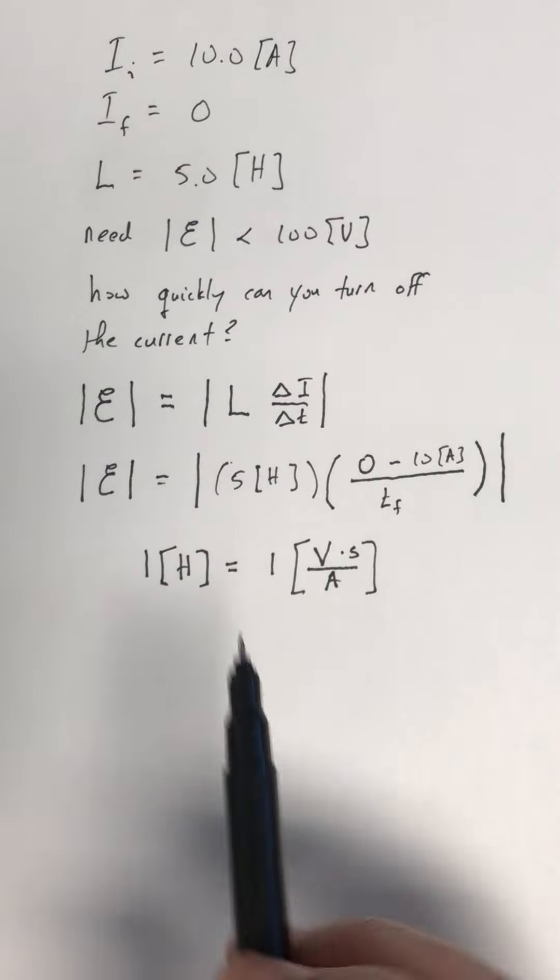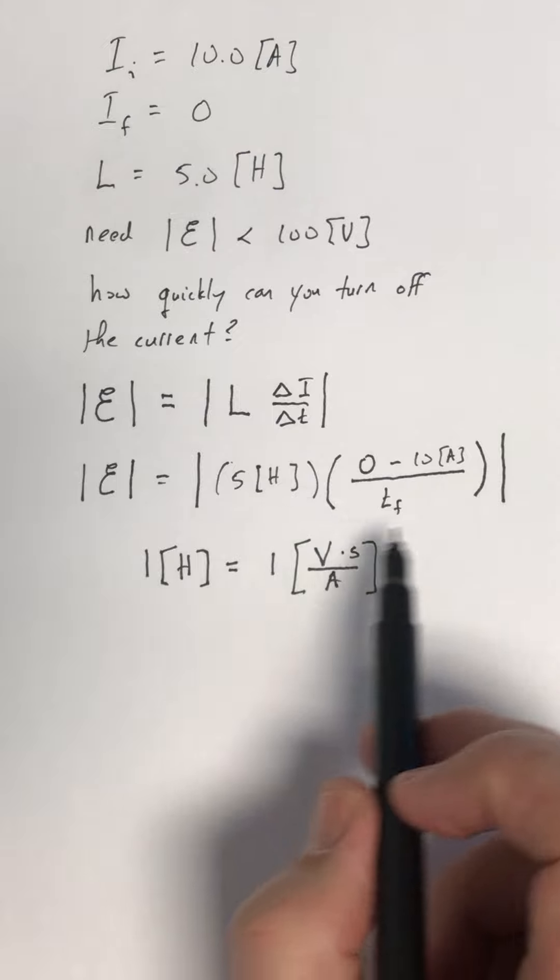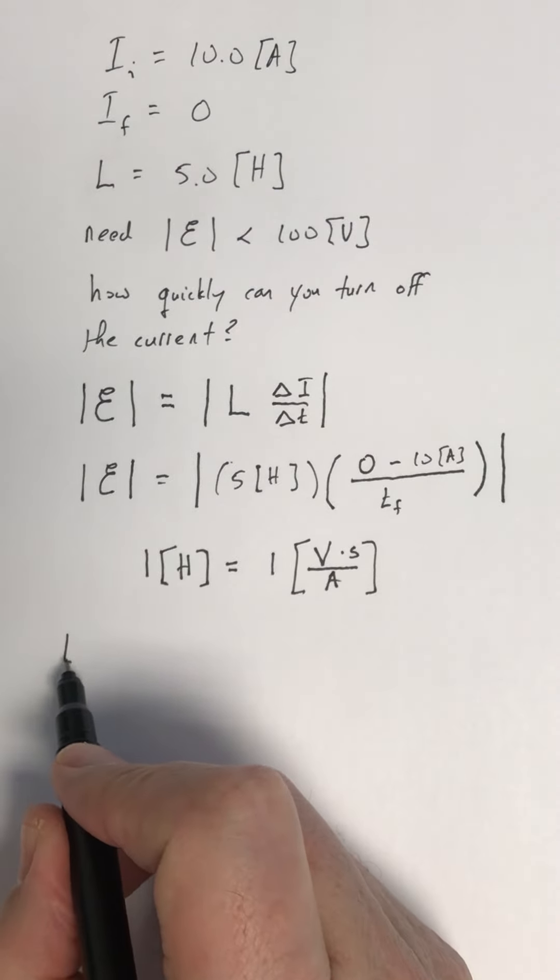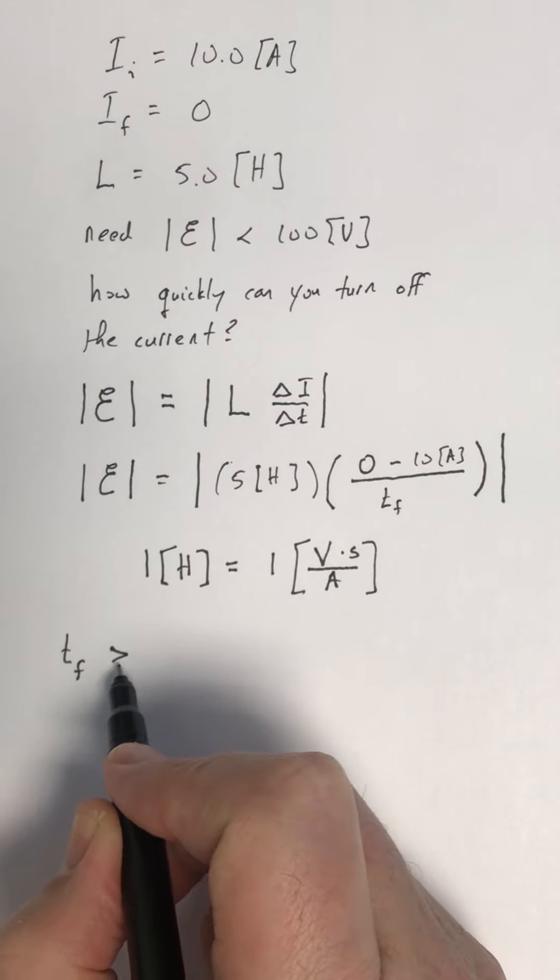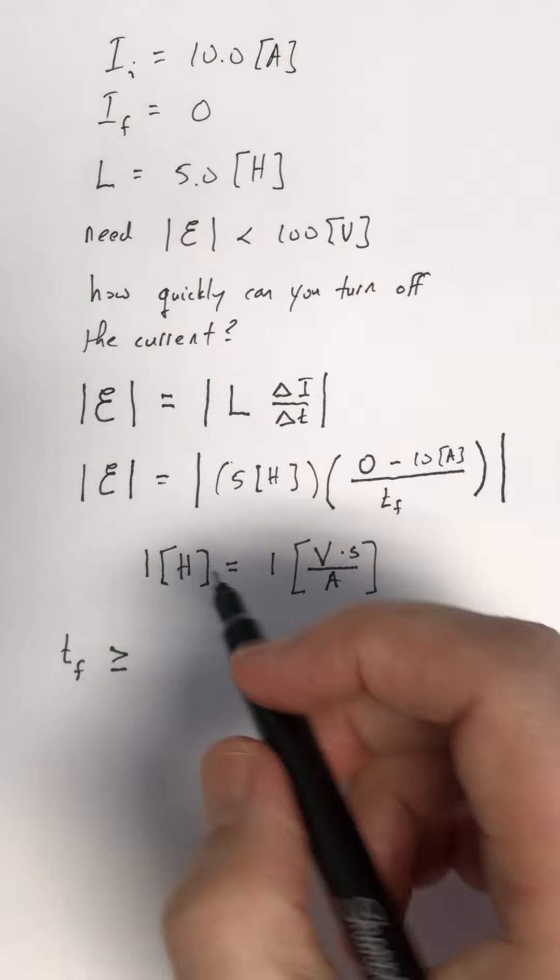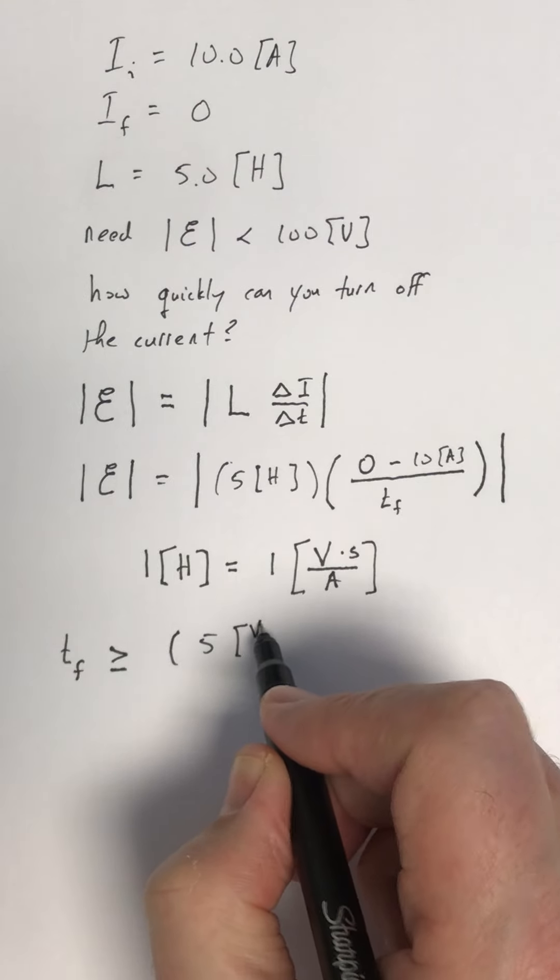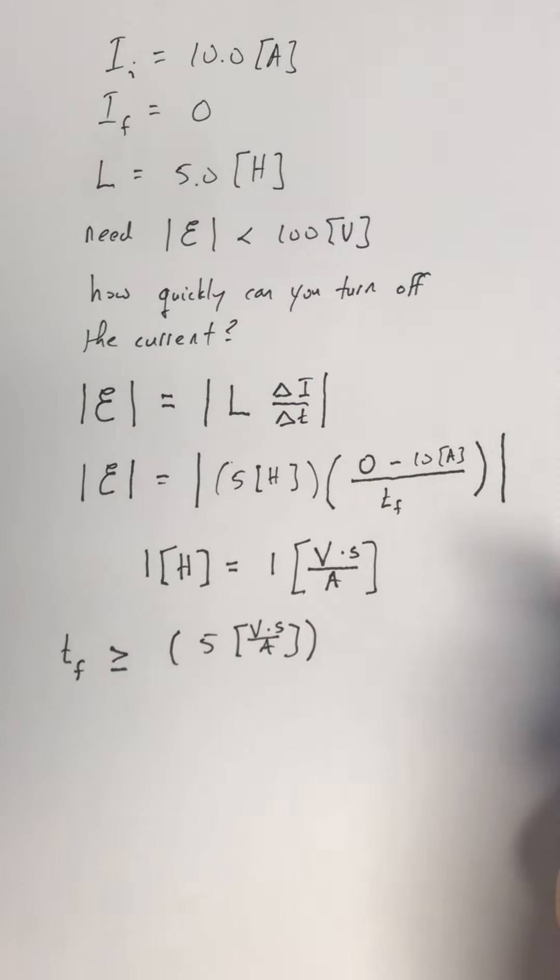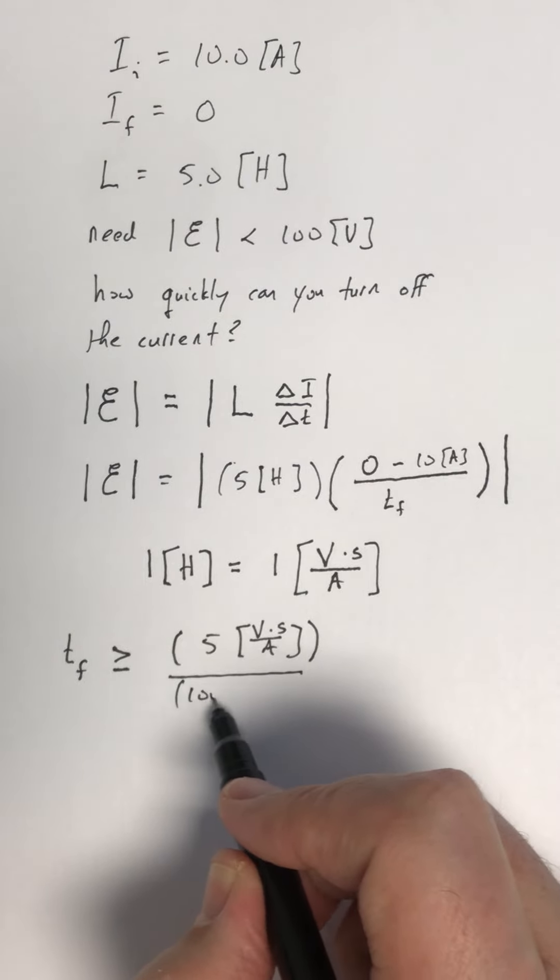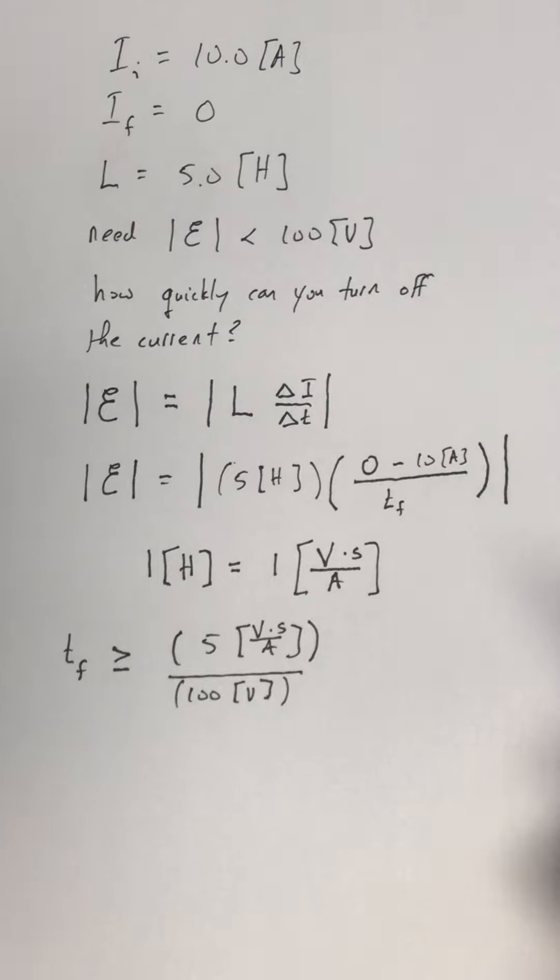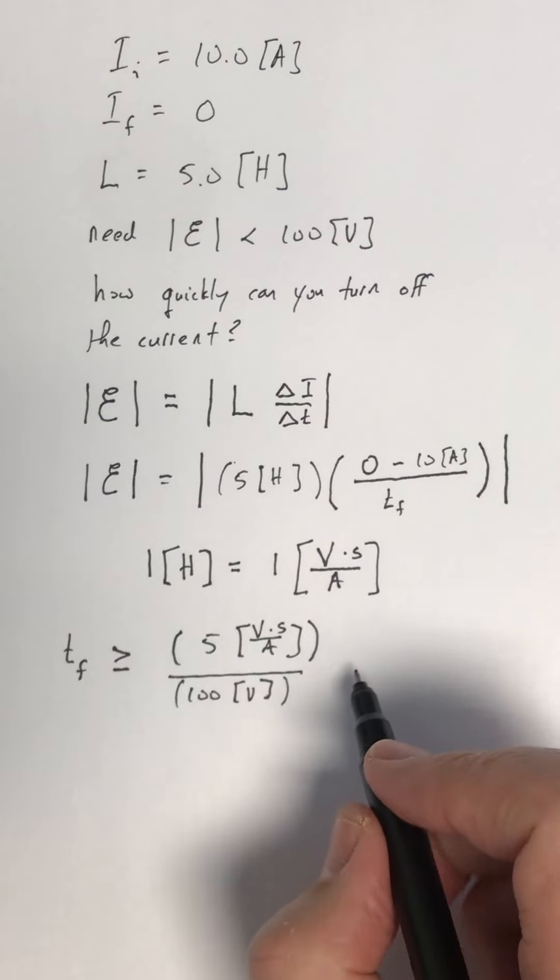If we rearrange this equation and solve for T final, it's going to have to be bigger than or equal to five volt second per amp. So that's our inductance. We don't want the induced EMF being bigger than 100 volts. And the change in current in absolute value is going to be 10 amps.